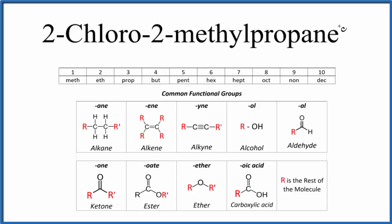The first thing we notice is that it ends in A-N-E. When it ends in A-N-E, we have an alkane. Since it's an alkane, it's going to be carbon atoms that are single bonded and surrounded by hydrogens.